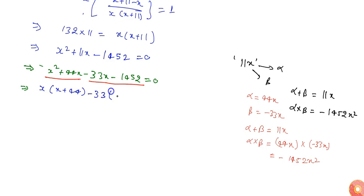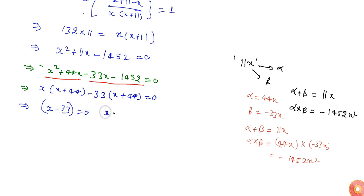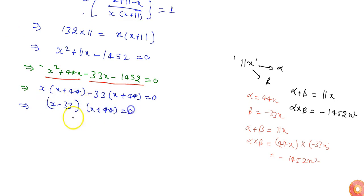So we write x squared plus 44x minus 33x minus 1452, and pairing in two groups: x times (x plus 44) minus 33 times (x plus 44) equals 0. Taking out the common factor (x plus 44), we get x minus 33 times x plus 44 equals 0.